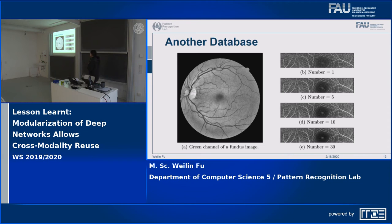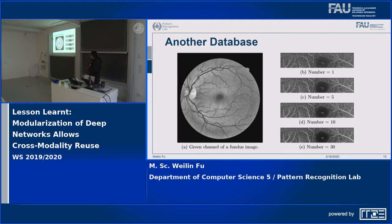We also want to evaluate our preprocessing methods more quantitatively. For this MICCAI work, we got new data from LENET — OCTA data where the number represents how many OCTA images are averaged. One image, averaged by 5, by 10, and by 30 — and the 30-image average is used as the ground truth.